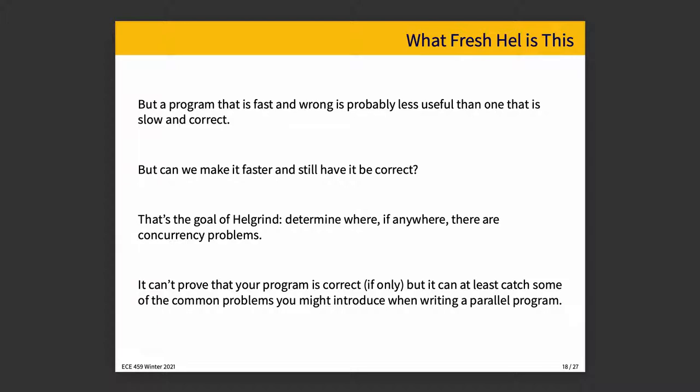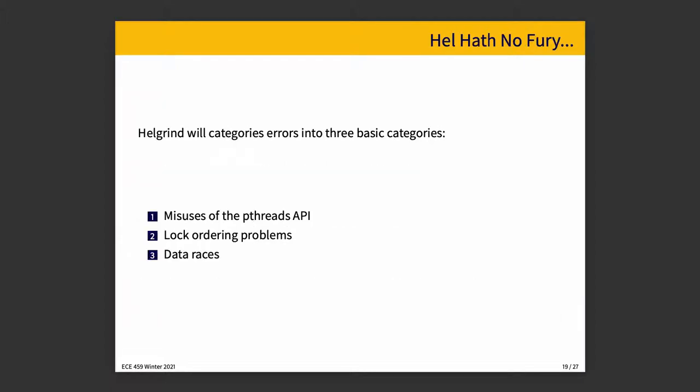What Helgrind does is observe at runtime what your program is doing and see if it finds anything wrong and report it if it does. It obviously can't prove that your program is correct. Proving correctness is actually really hard when it comes to programs. However, it can catch some errors that occur commonly.